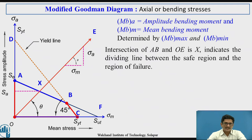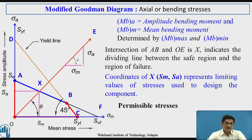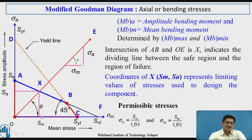I mark the point SA: a horizontal line from X gives SA, and a vertical line from X intersecting the x-axis gives SM. The coordinates SM and SA represent the limiting values of stress used to design the component. The permissible stresses are sigma_A equals SA divided by FS and sigma_M equals SM divided by FS, where SA is the y-coordinate and SM is the x-coordinate of point X.